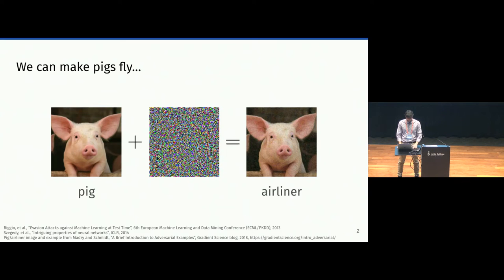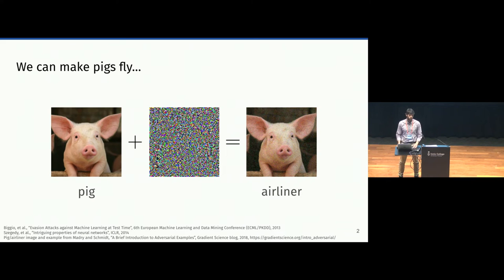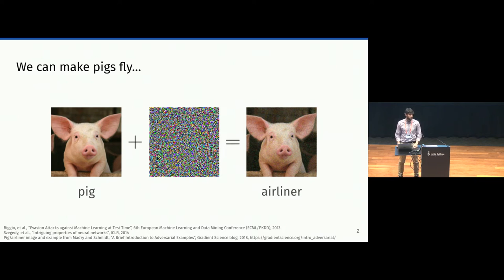At this point, you all know that thanks to adversarial examples, we can make pigs fly, meaning that we can add a perturbation to a given image, which we craft in a way that a target classifier is going to misclassify the image. In this case, the pig is going to be misclassified as an airliner. This is established to be easy if we have white box access to the model via projected gradient descent.